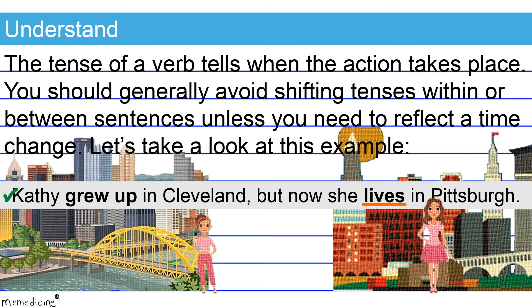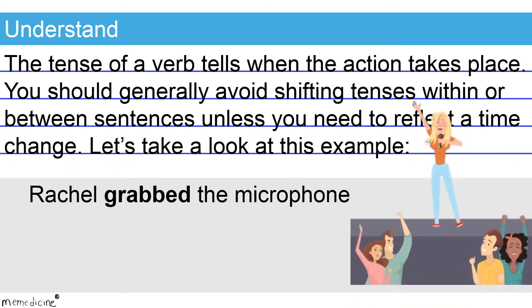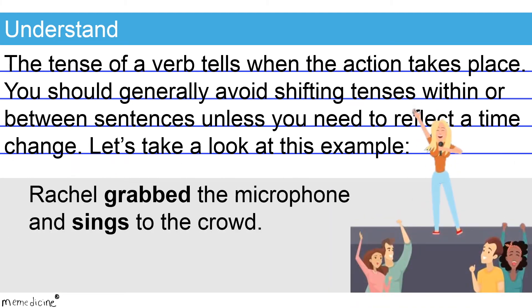Check out this second example: Rachel grabbed the microphone and sings to the crowd. There is no need to reflect a time change, so both verbs should be in the same tense. The first featured verb, 'grabbed,' is written in the simple, singular, past verb tense. So we know the singing also took place in the past.